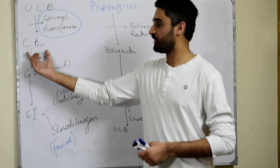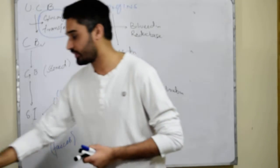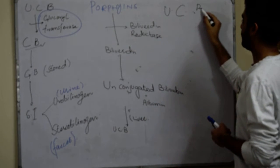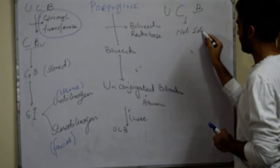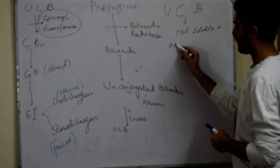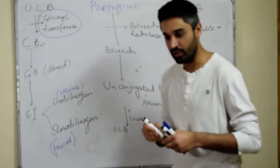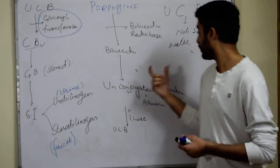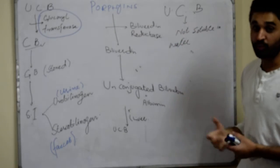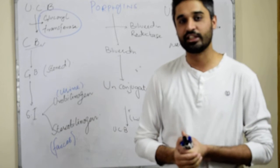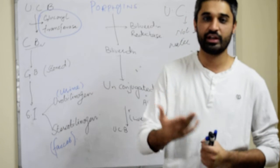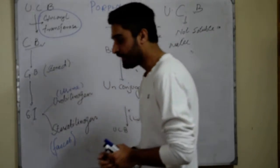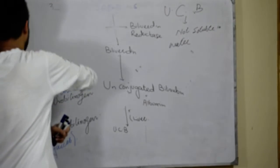Why is this conjugation taking place? Because unconjugated bilirubin is not soluble in water, and therefore it cannot be eliminated through urine or feces. So unconjugated bilirubin is not water-soluble and keeps on rising in the body. It also has a tendency to cross the blood-brain barrier, and whenever it crosses the blood-brain barrier, it can lead to a condition known as kernicterus. This was the normal phenomenon.